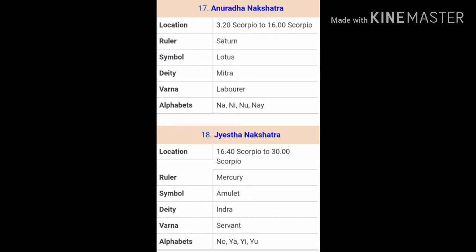The next Nakshatra is Anuradha Nakshatra, represented by the symbol of a Lotus. A Lotus is seen in ponds where the substrate is very bad — it represents coming out of bad situations and still being good. A person born with Anuradha Nakshatra generally struggles a lot in life, but this is very good for his spiritual elevation. Anuradha Nakshatra is ruled over by Saturn or Shani, who is a karmic deity.